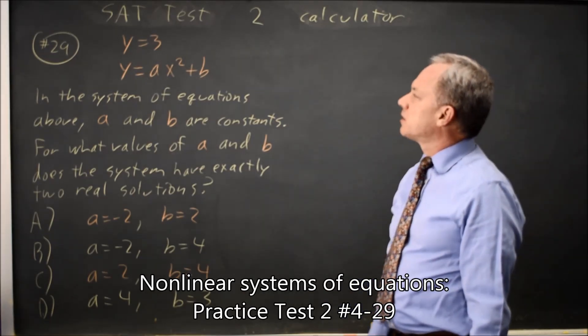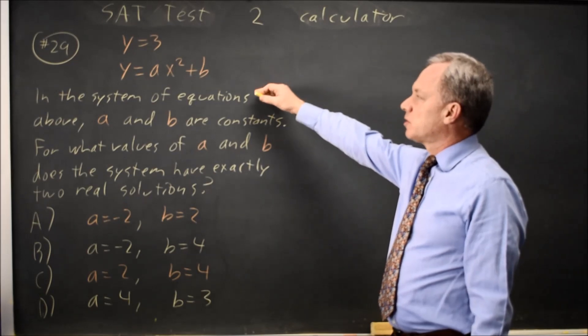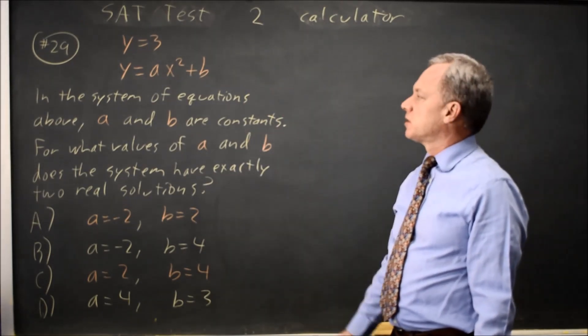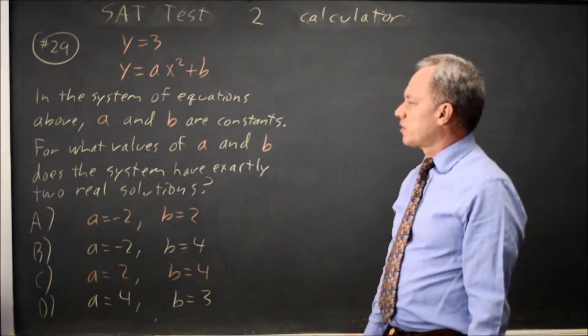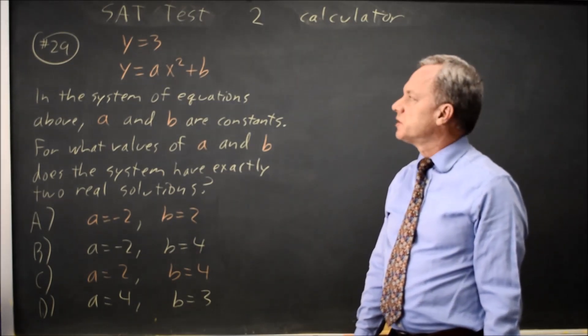This is SAT test two calculator question number 29. College Board gives us a system of equations where one is constant and the other is quadratic and asks for what values of A and B does the system have exactly two real solutions.